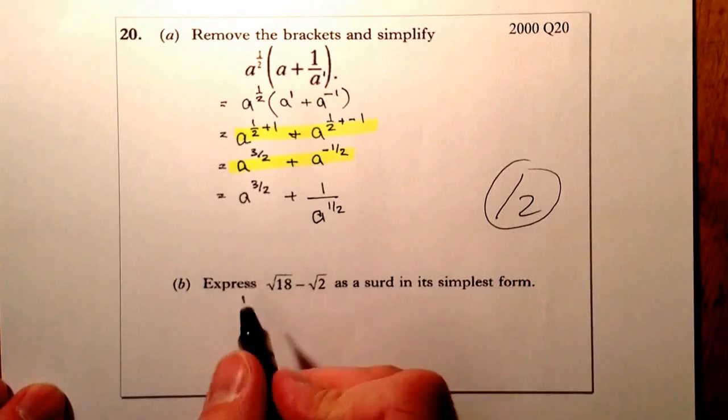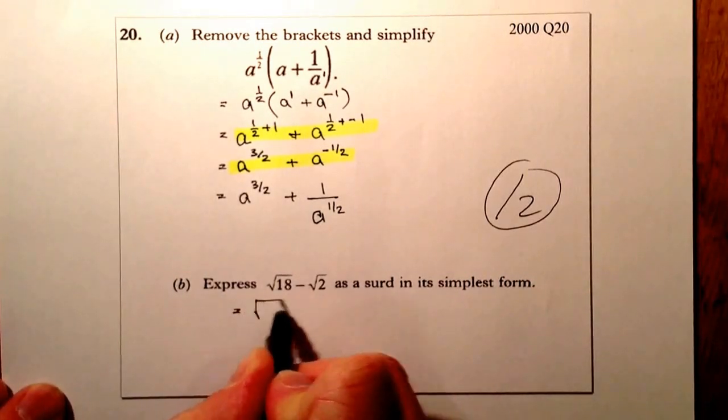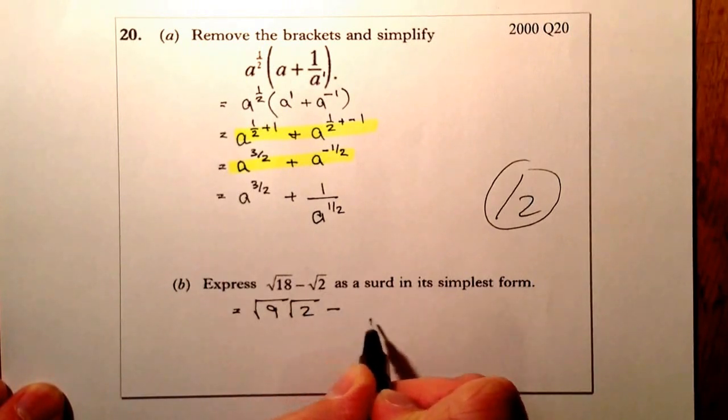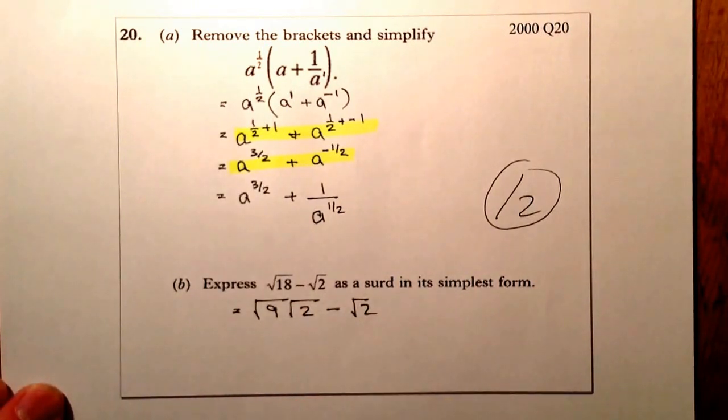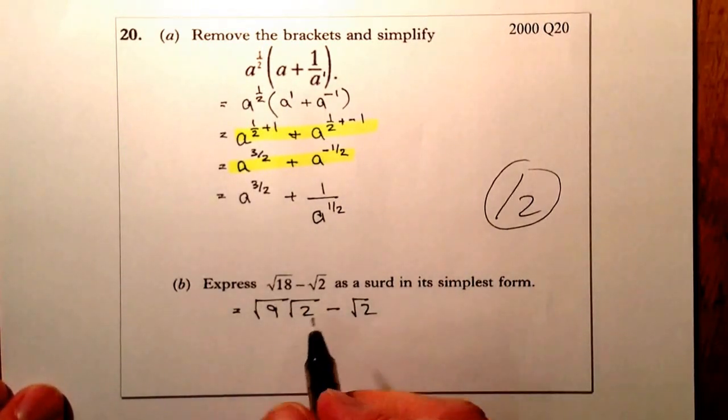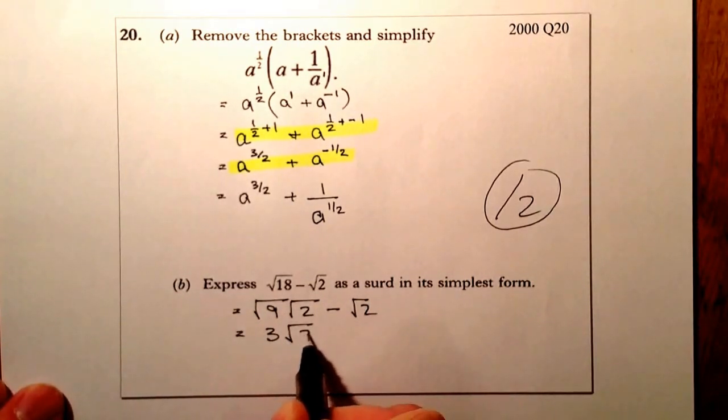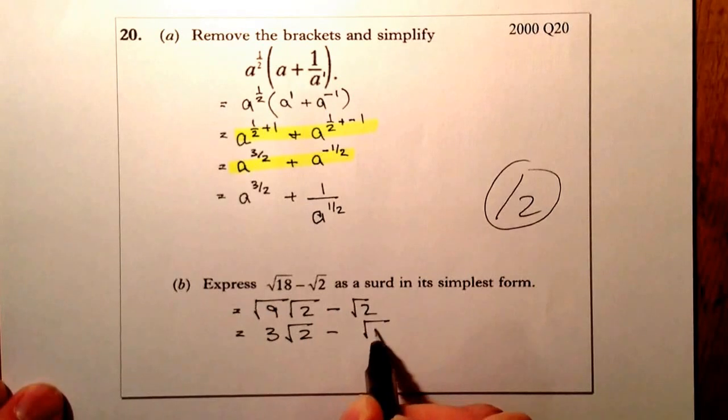9's a square number, so that helps me out. So the first line would be root 9 times root 2, subtracting here, root 2. What I'll then do is I'll take the square root of 9, which gives me a 3, root 2, minus root 2.